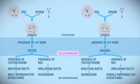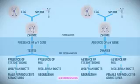Sex determination sets the stage for sex differentiation. Early on in development, the embryo possesses both rudimentary male structures called Wolfian ducts and female rudimentary structures called Mullerian ducts.